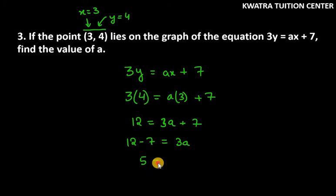12 minus 7 is 5, so 5 equals 3a. How much is the value of a? 5 over 3. This is the answer for question number 3.